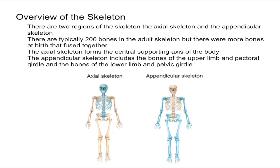In this video I'm going to give an overview of the skeleton and tell you about the two specific regions of the skeleton we're going to be concerned with. There are two regions of the skeleton: the axial skeleton and the appendicular skeleton.